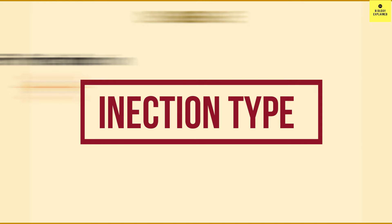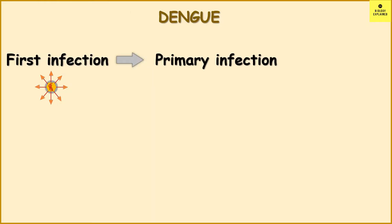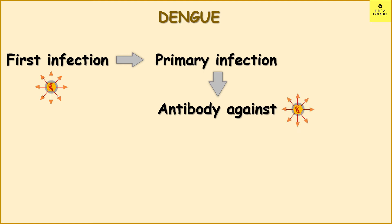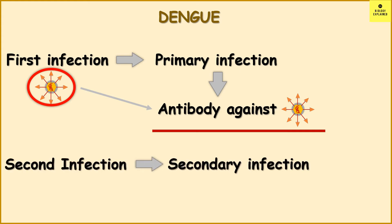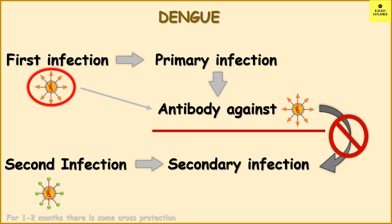In case of dengue, the first infection is called primary infection, which is generally mild in most cases but can be severe in some cases. This primary infection develops antibodies against a particular dengue virus only. For example, if a person is infected with Dengue virus 1, it will develop antibodies against Dengue virus 1 only. Now, if the next infection — that is, secondary infection — occurs with Dengue virus 2, it does not get any protection from the first infection.